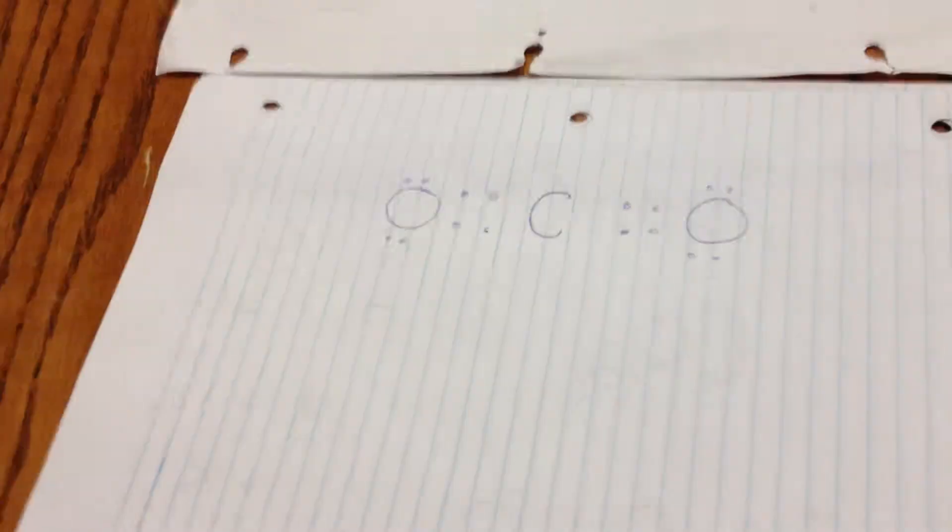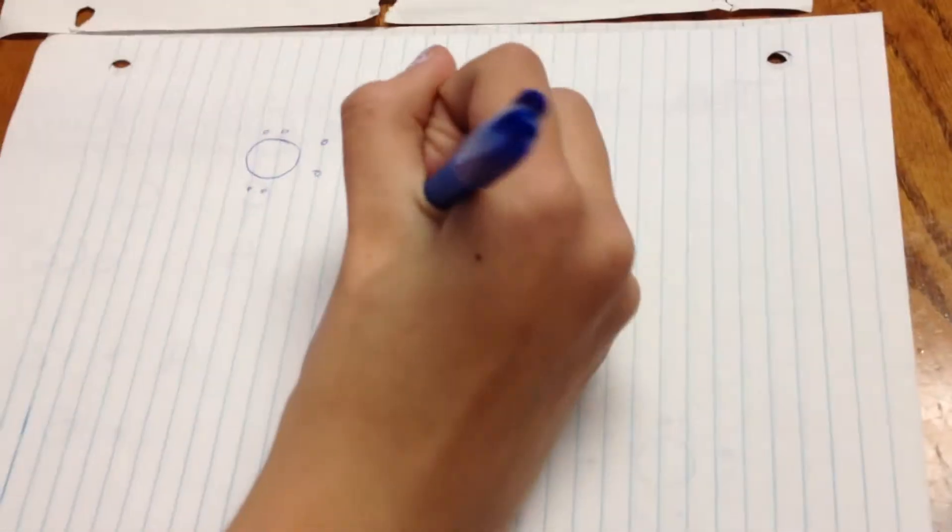Awesome. Now one more way you could draw this would be by instead of having the circles between the oxygen and the carbon, you could also draw it like this.